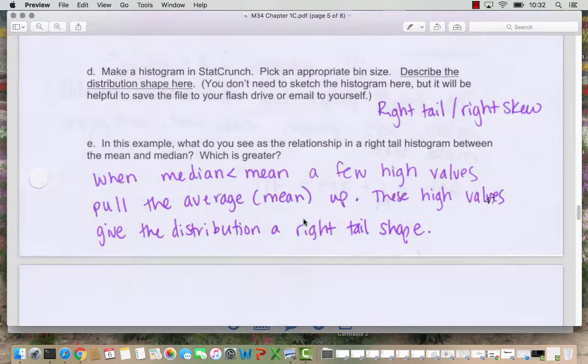So for summary, we can say when the median is less than the mean, a few high values pull the average of the mean up. And these high values give the distribution the right tail shape.